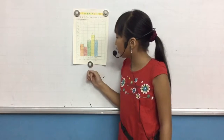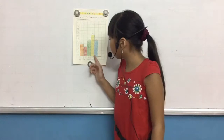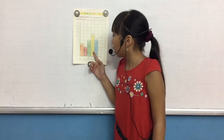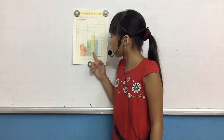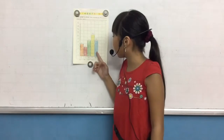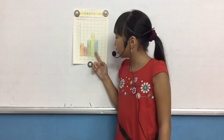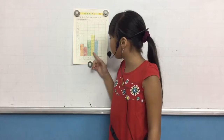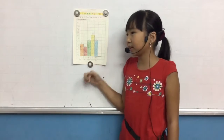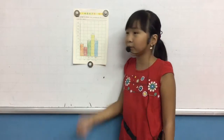The number of the pens is the least, and the number of the rubbers is the greatest. The number of the notebooks and bags are equal — they are both 20. The difference between the greatest and the least is 18, because 32 minus 14 equals 18.